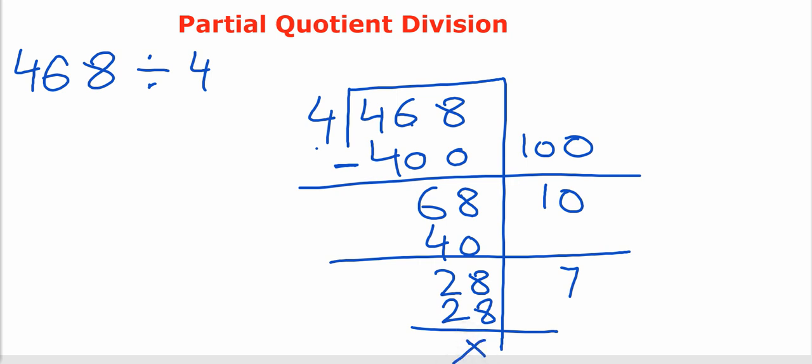So it means that this number will not have any remainder. Now, what is the quotient? What is the answer? The answer is we have to add these numbers. 100 plus 10 is 110. 110 plus 7 is 117.